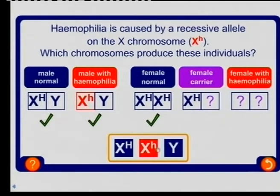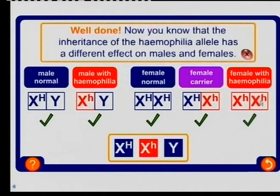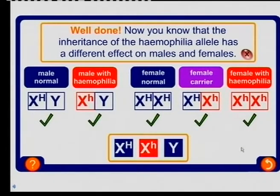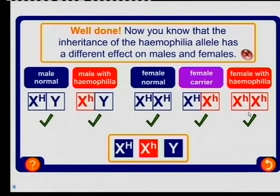A female carrier has one normal chromosome and one with the hemophilia allele. A female with hemophilia — a sufferer — must have both recessive alleles to be affected. Interestingly, it's extremely rare to find a woman with hemophilia. Statistically, females with both hemophilia genes die very early — almost before they are even an embryo — so you can say they die before birth.